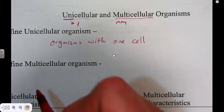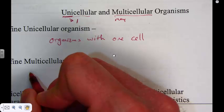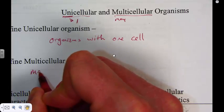And multicellular organisms are organisms with many cells, or more specifically, with many kinds of cells.